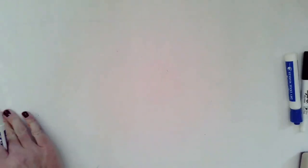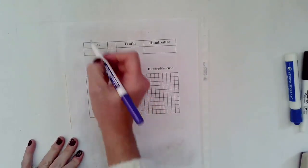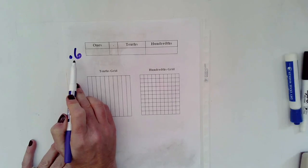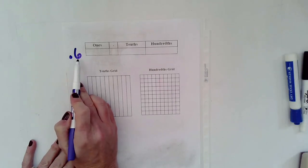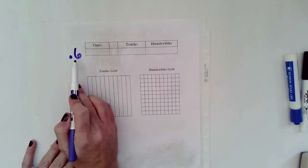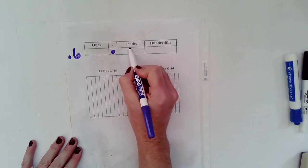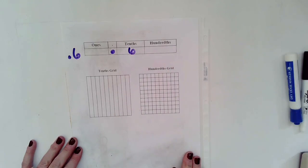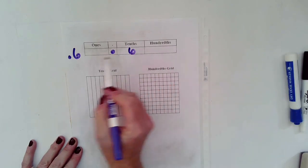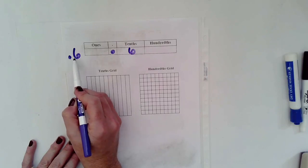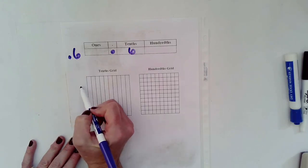Let's look at another number and put it in our place value chart. This number has a decimal point and a six. Since the six is to the right of the decimal, it's not just six wholes. Using our place value chart, putting the six in the first spot after the decimal tells me that this number is six tenths — that's how I would say it and write it. I wouldn't say 'and six tenths,' I would just say 'six tenths.'